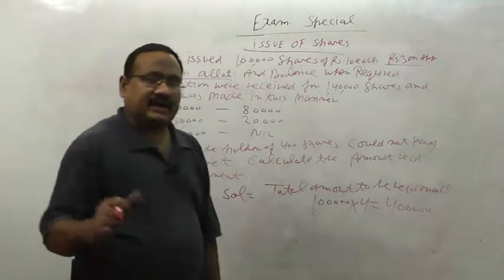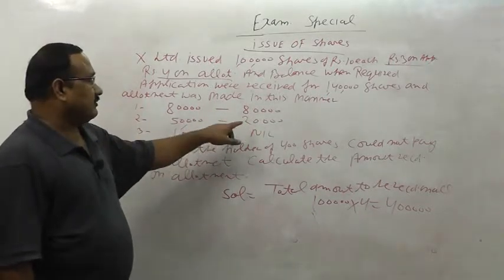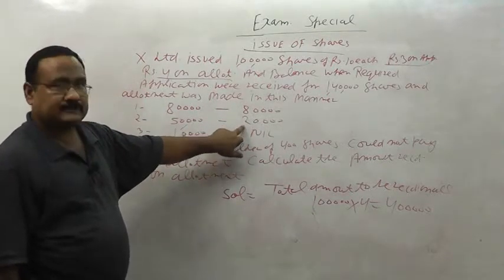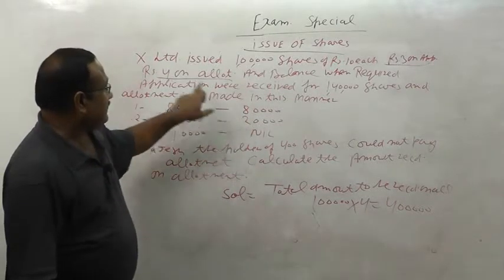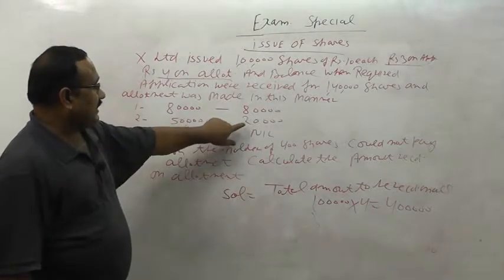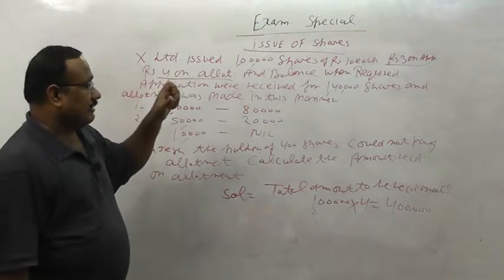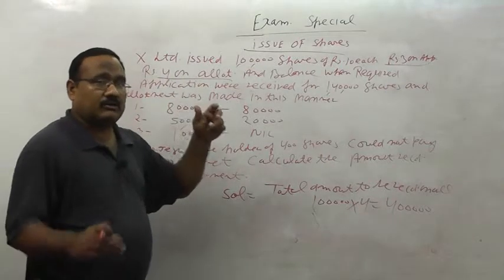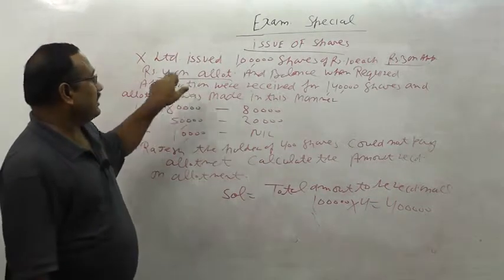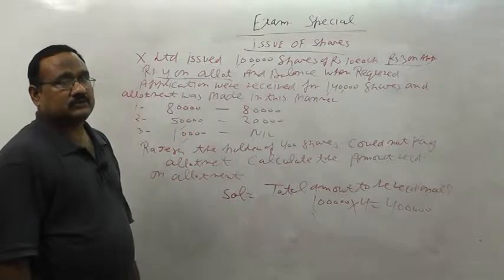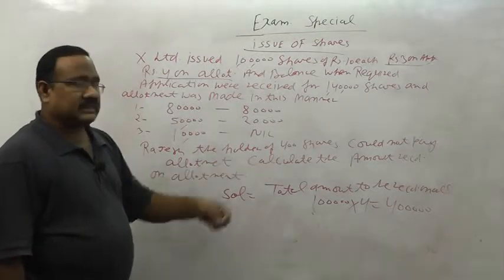Now, how to directly find out the carry forward amount? Look at the allotment figures: 80,000 applied and got 80,000; 50,000 applied, got 20,000 — these 20,000 got fewer shares. Multiply this 20,000 by the allotment amount of rupees 4. If you multiply this amount with the allotment amount, you will get the carry forward amount. There are 20,000 extra shares at allotment rupees 4, so 80,000 rupees extra amount which we received in application and will adjust against allotment.